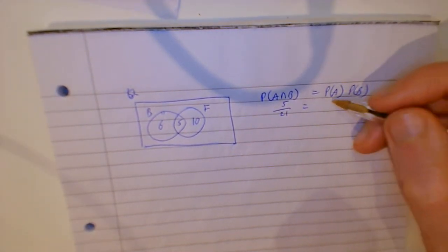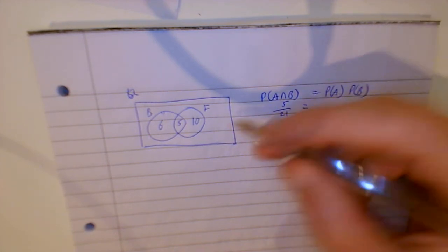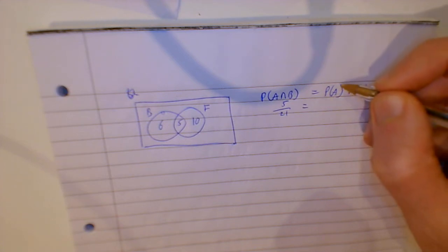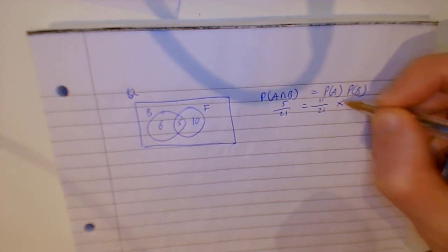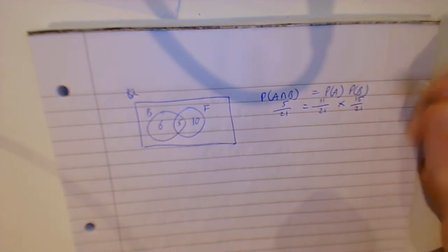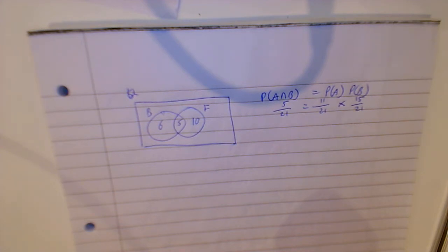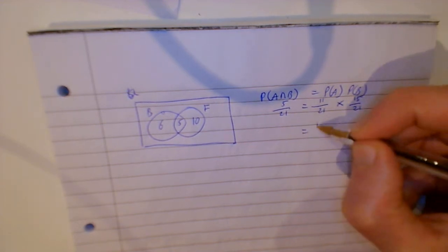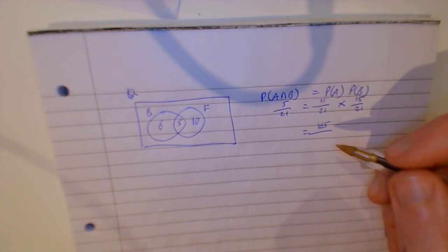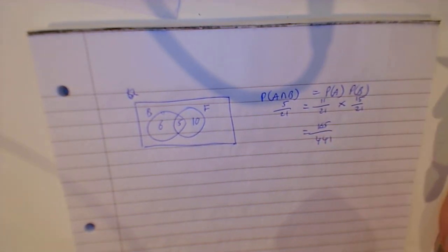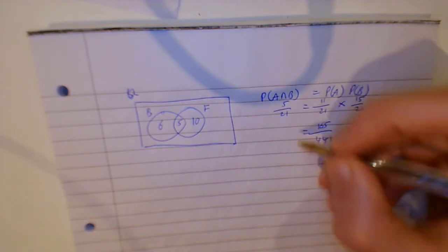We've got totals of 6, 10, and 15, giving us 21 total. So P(F ∩ B) is 5 out of 21. Now we check: P(B) is 11 out of 21 and P(F) is 15 out of 21. Multiply those: 11 times 15 is 165, over 21 times 21 which is 441. That gives 0.374, while 5 over 21 is 0.238 - they do not equal each other.